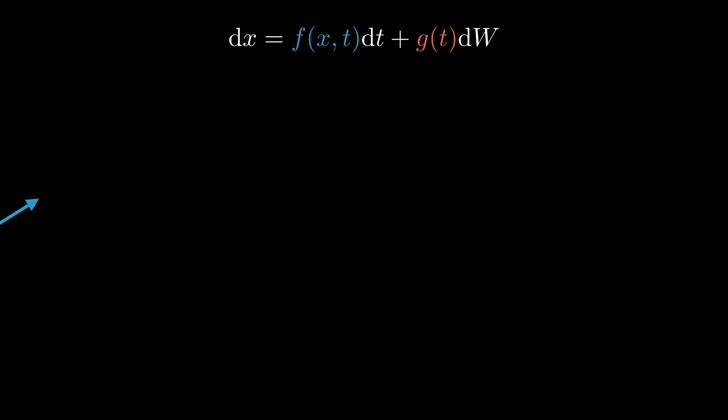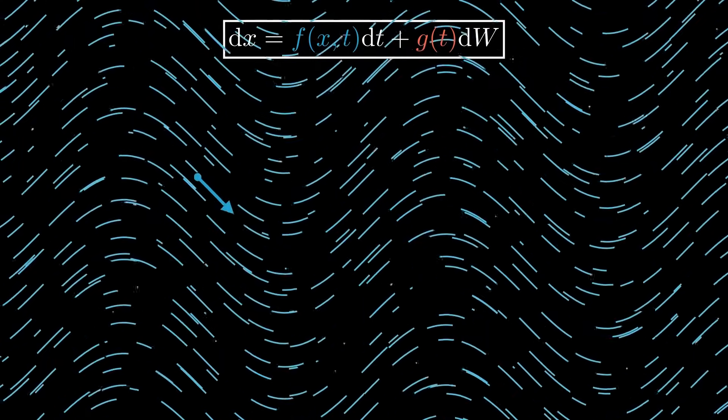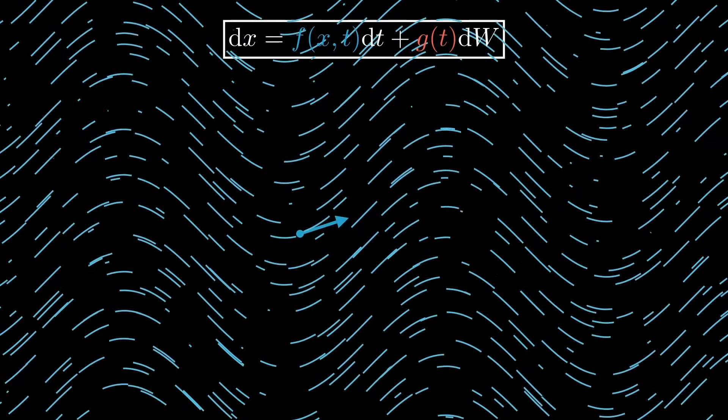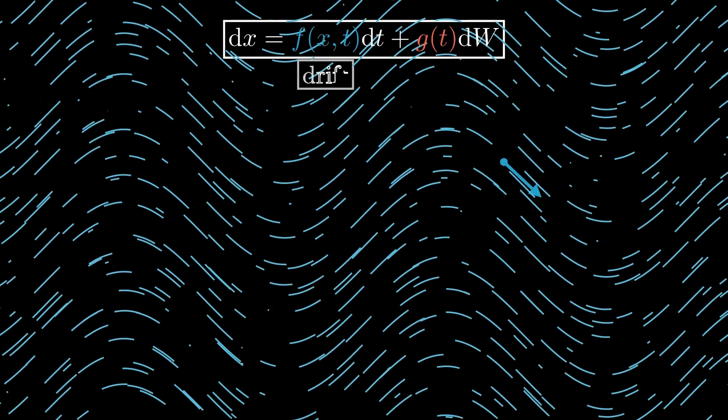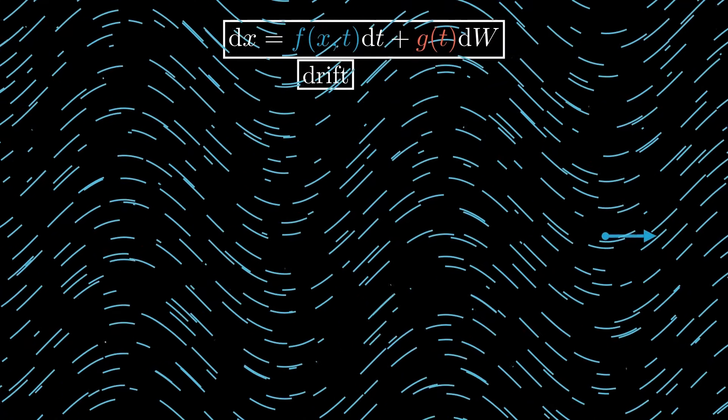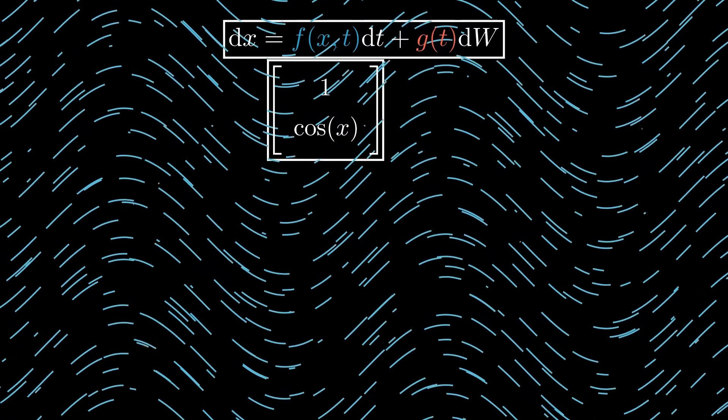Let's think of this in terms of particles. The first term in the equation describes how the position of a particle changes due to the deterministic force, like a wind pushing it in a given direction. This term is called the drift, and it is completely deterministic, meaning that we can predict the exact path that the particle will follow.